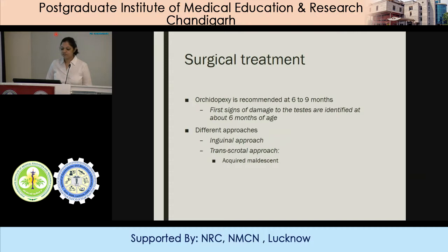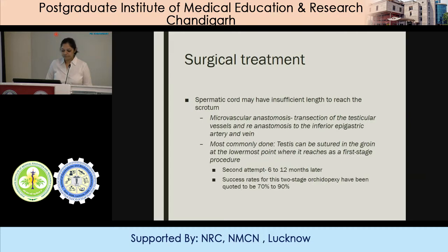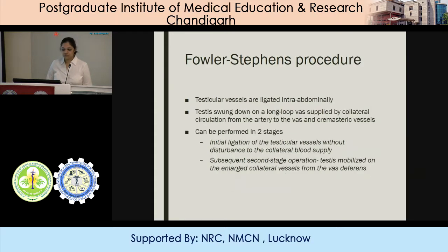Coming to surgical treatment, orchiopexy is recommended at around six months of age, as first signs of damage in testes are identified at about six months of age. The most commonly used approach is the inguinal approach. Transcrotal approach has been described for acquired mild descent of the testes but is not usually practiced. If the spermatic cord has insufficient length to reach the scrotum, microvascular anastomosis can be done, anastomosing testicular vessels to the inferior epigastric vessels. The most commonly used technique is to suture the testes to the groin at the lowermost point in the first procedure, and a second procedure can be attempted after six to twelve months to bring it down to the scrotum, with a success rate of 70 to 90%.